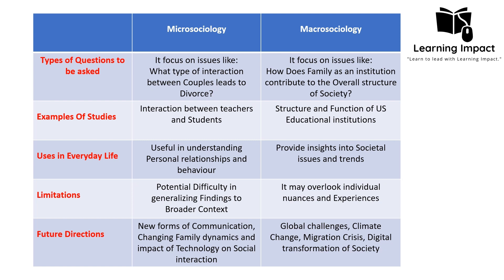Regarding examples of studies, a micro sociology example is the interaction between a teacher and a student — a simple interaction studied at a small scale. Macro sociology would study the structure and function of the entire education institution. Micro sociology would only study the sub-unit — teacher and student interaction — while macro sociology studies the whole structure and function of the institution. In everyday life, micro sociology is useful for understanding personal relationships and behavior and helps modify personal interaction, while macro sociology provides insight into societal issues and trends.